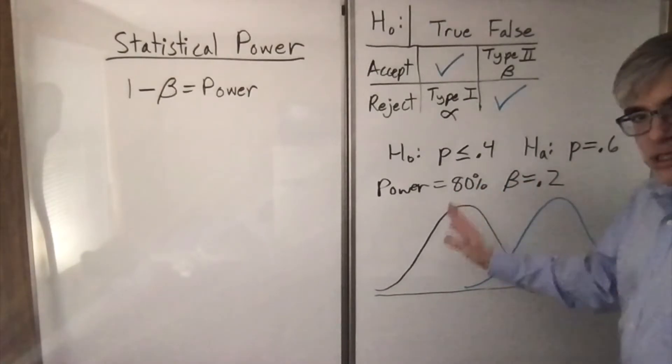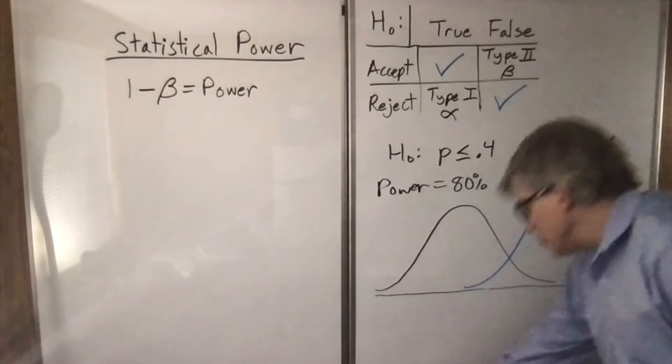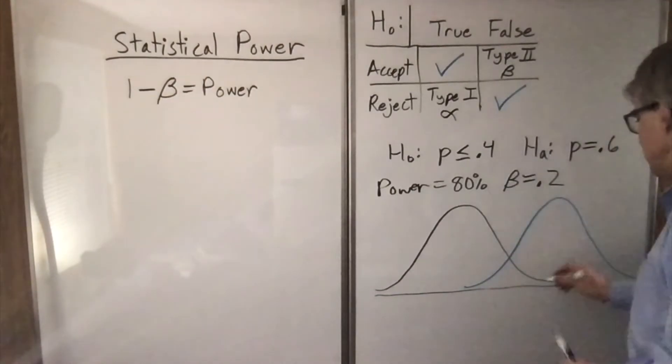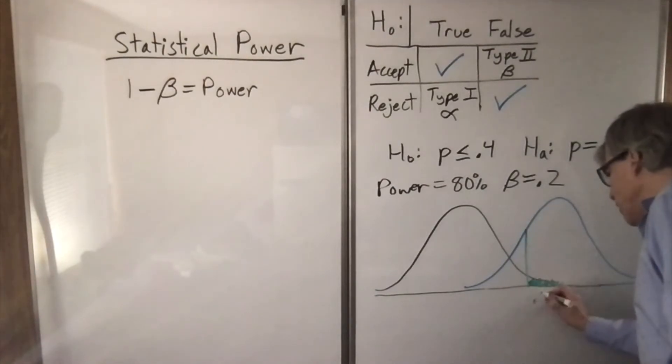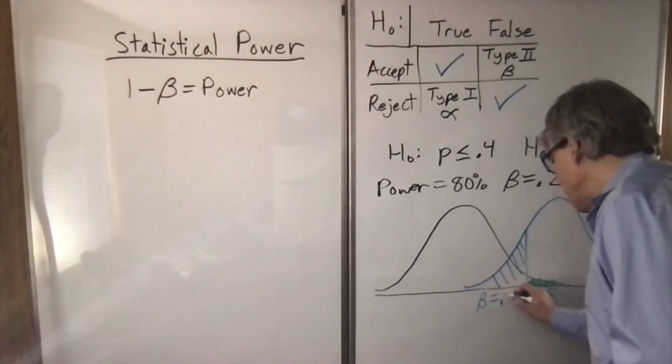Here's the thing. Alpha is supposed to be small, so we need to be scooted over. Beta is bigger, so we can have more area, which means the line you want to draw is like to the right of the intersection, something like that. That way this area is 0.05, and this area, beta, is 0.2.